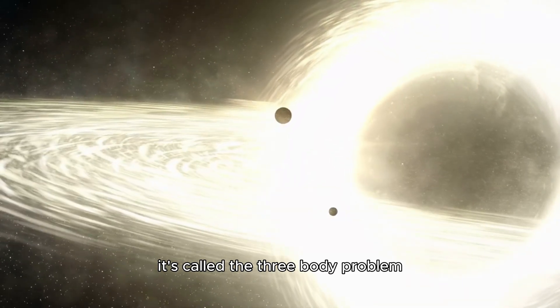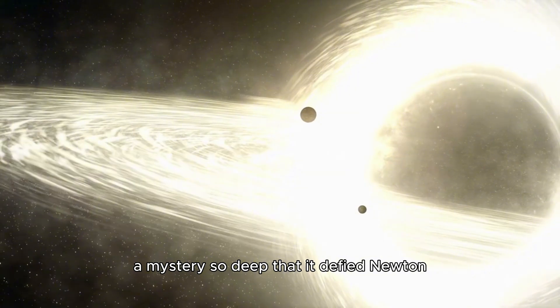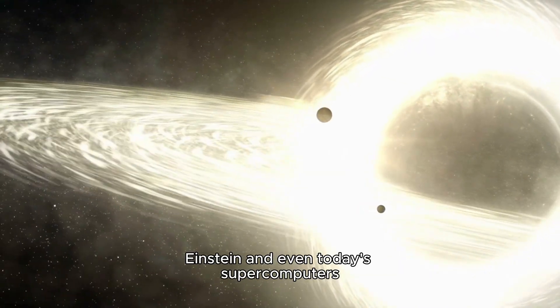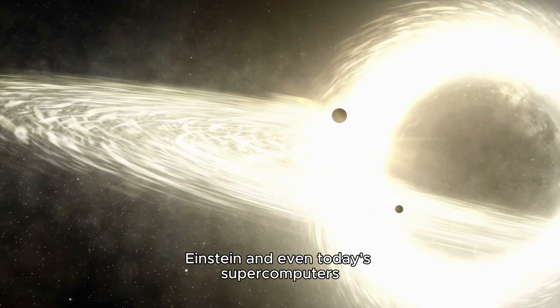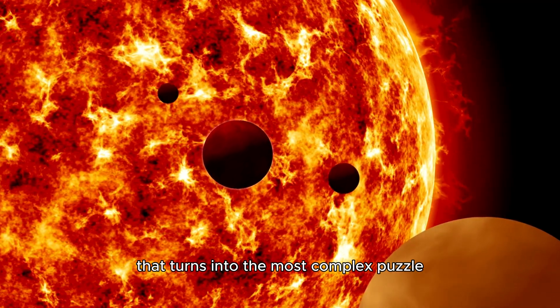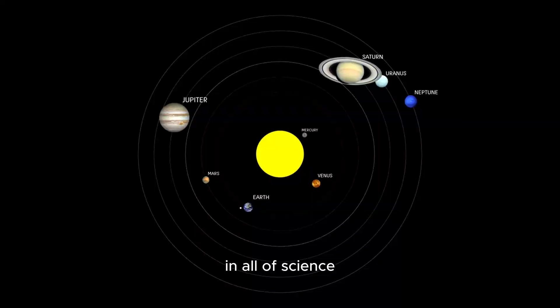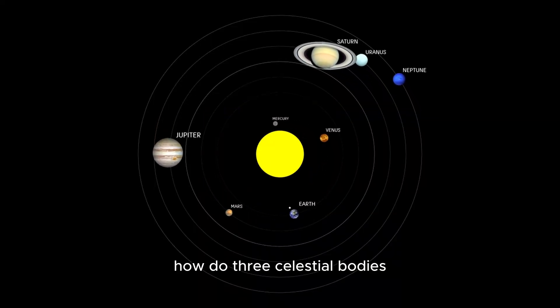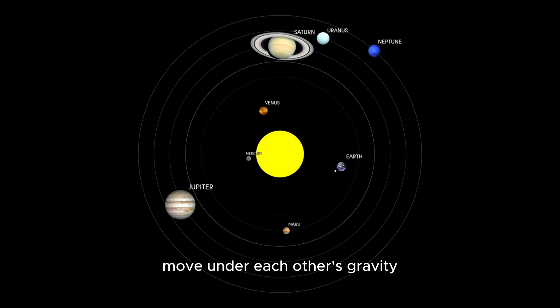It's called the three-body problem. A mystery so deep that it defied Newton, Einstein, and even today's supercomputers. A simple question that turns into the most complex puzzle in all of science. How do three celestial bodies move under each other's gravity?